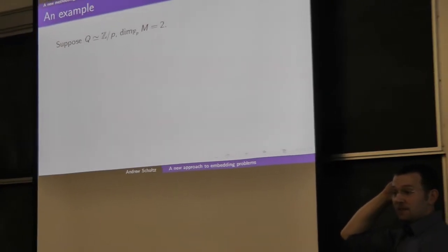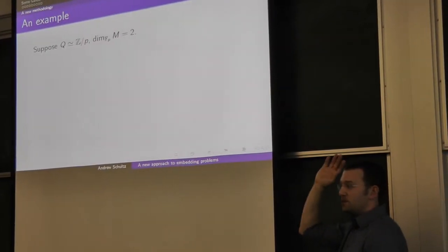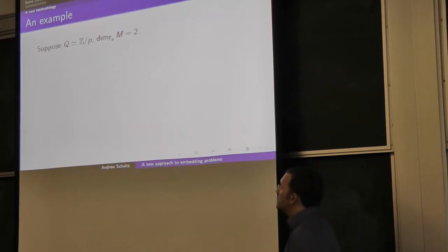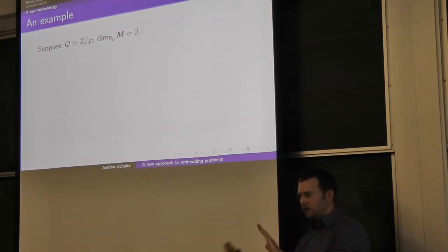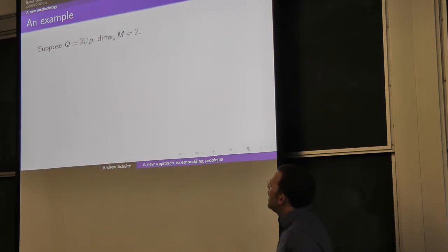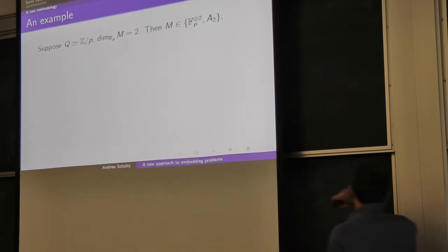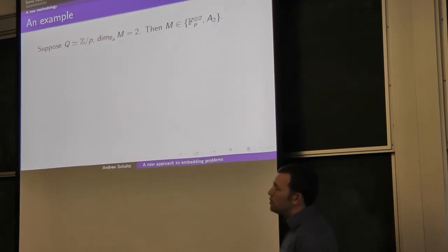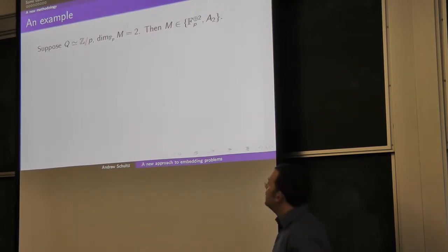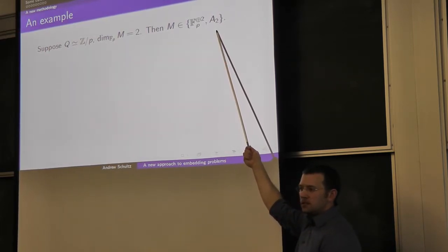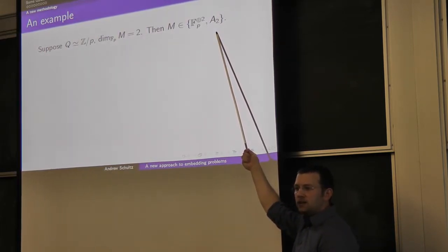Let me give a couple of examples to bring this back down to earth. Suppose the quotient group is Z mod p and the dimension of the kernel is 2, with p odd. If M has dimension 2, it's one of two things: either it's the trivial module — a direct sum of two copies of Fp — or it's A2, the cyclic FpQ module of dimension 2 with non-trivial Q action.